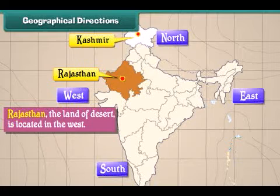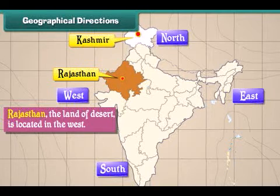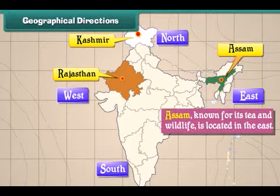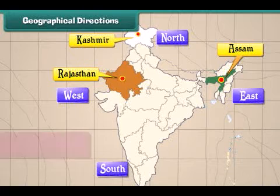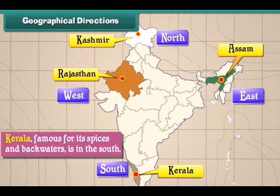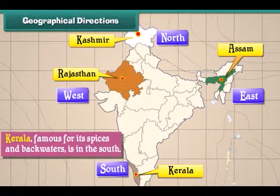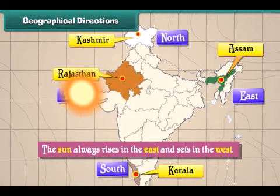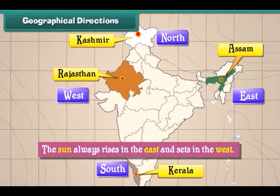Rajasthan, the land of desert, is located in the west. Assam, known for its tea and wildlife, is located in the east. Kerala, famous for its spices and backwaters, is in the south. The sun always rises in the east and sets in the west.